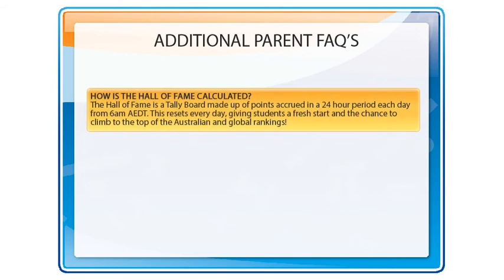How is the Hall of Fame calculated? The Hall of Fame is a tally board made up of points accrued in a 24 hour period each day from 6am Australian Eastern Daylight Saving Time. This resets every day, giving students a fresh start and the chance to climb to the top of the Australian and global rankings.